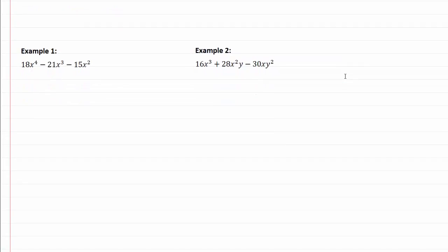In our first example, we have 18, 21, and 15. All of those are divisible by 3, so that means 3 is a common factor.